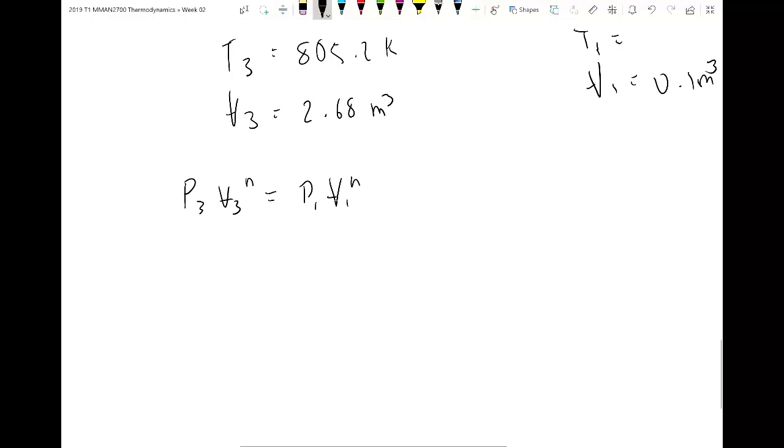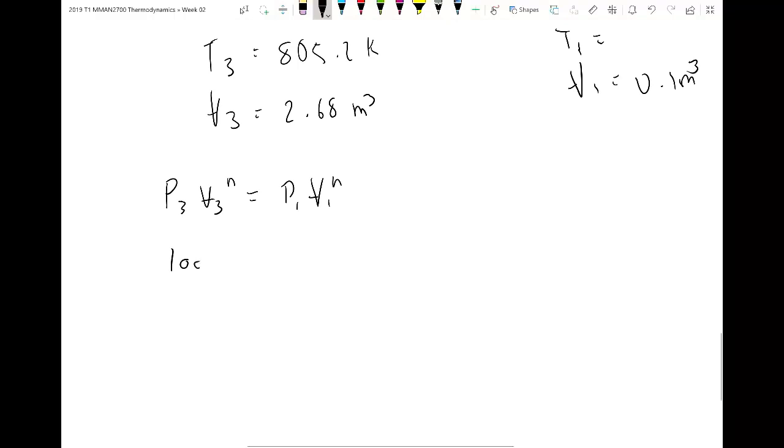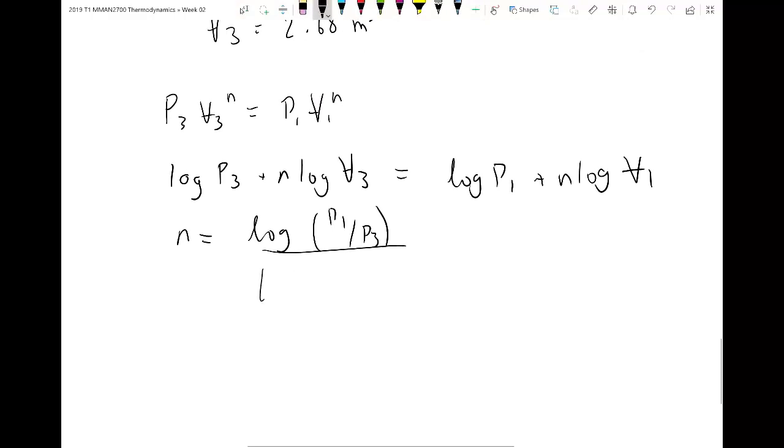So remember that when we're taking the logs of two multiples, we end up with something like this. So log P3 plus n log V3 equals log P1 plus n log V1. So if you rearrange that, I won't go through all the steps. You'll get log P1 on P3 over log V3 over V1. So if you substitute the values for the pressures at both state points as well as the volumes, you should end up with your final index of 0.7. So that's the answer to part A.